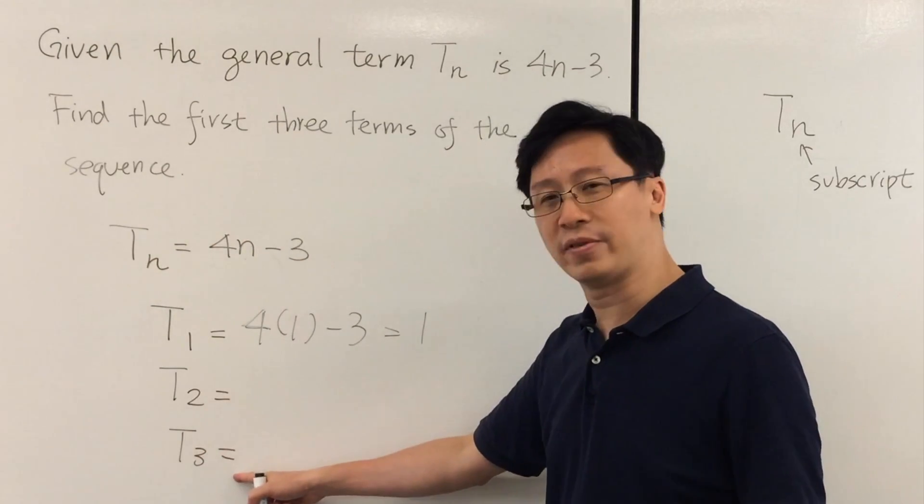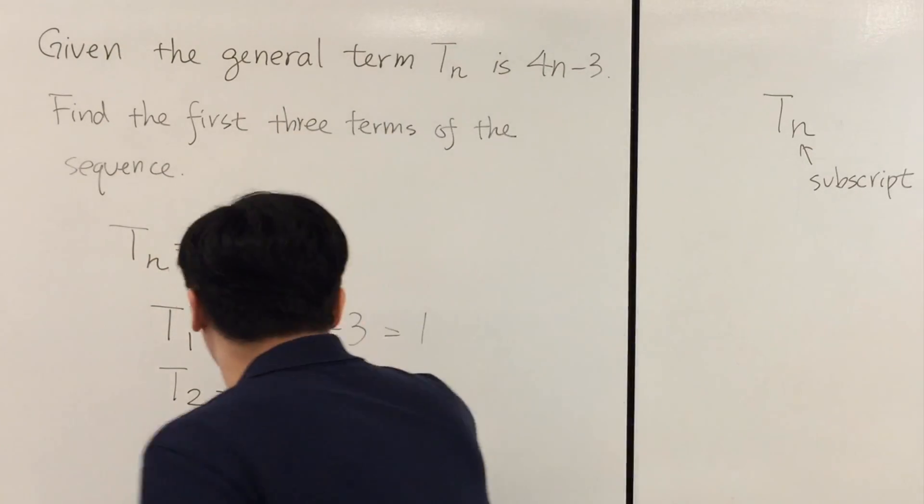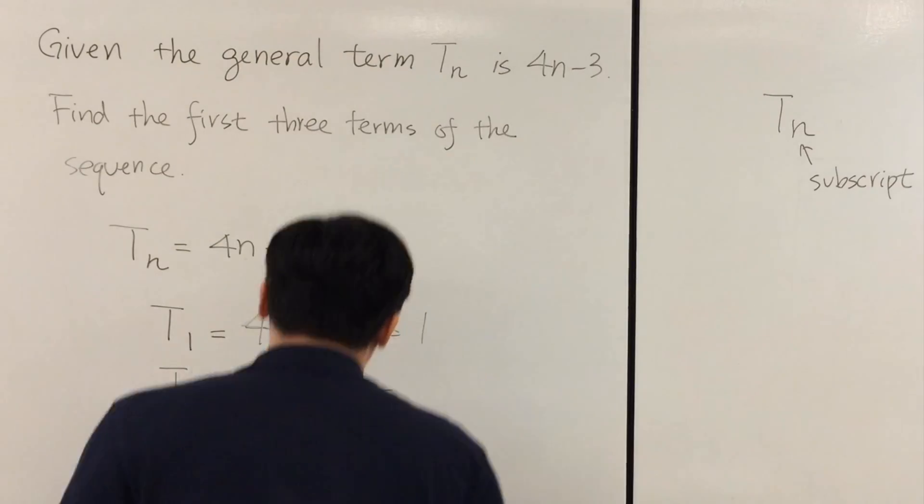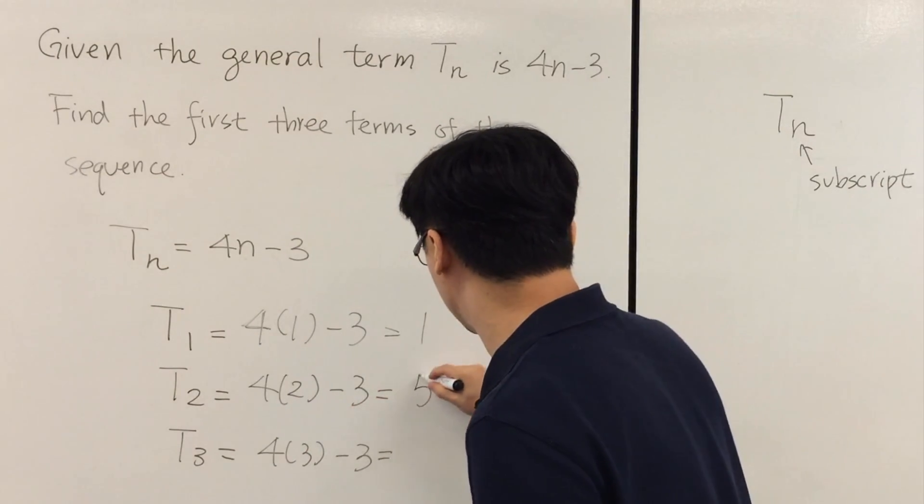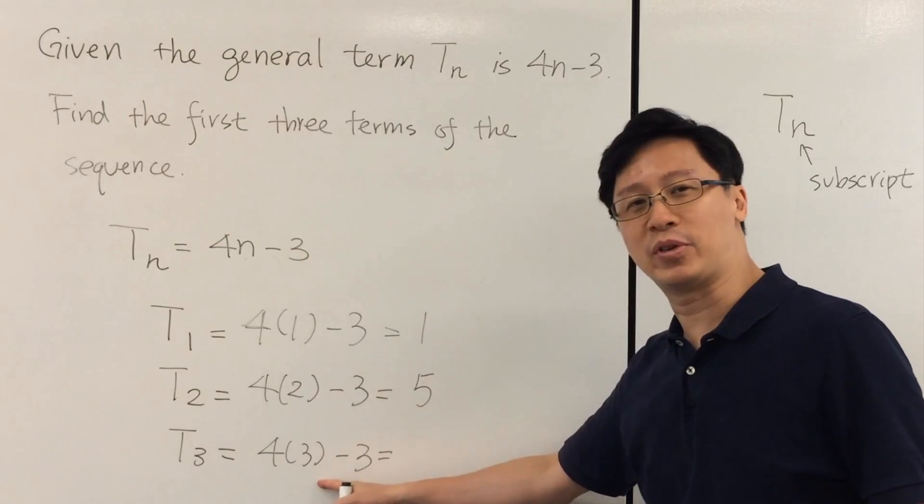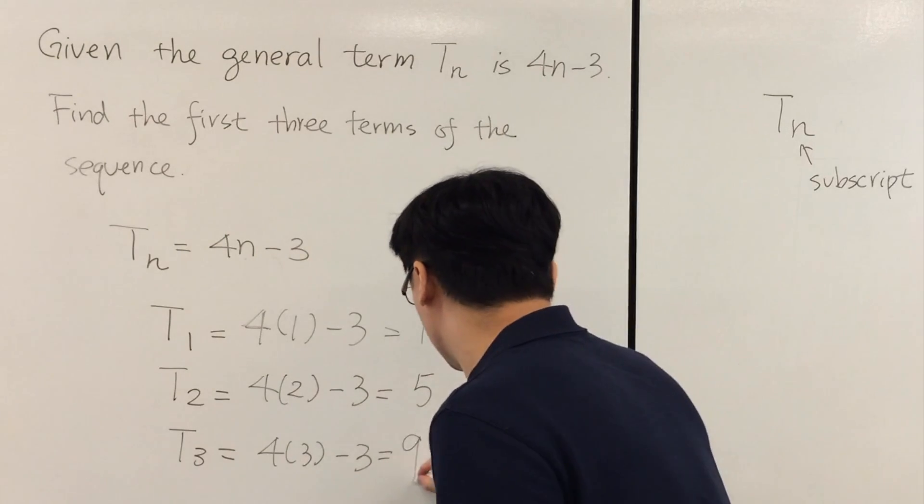T_2, the second term; T_3, the third term. So 4 times 2 minus 3, which is 5. 4 times 3 minus 3, it will be 9.